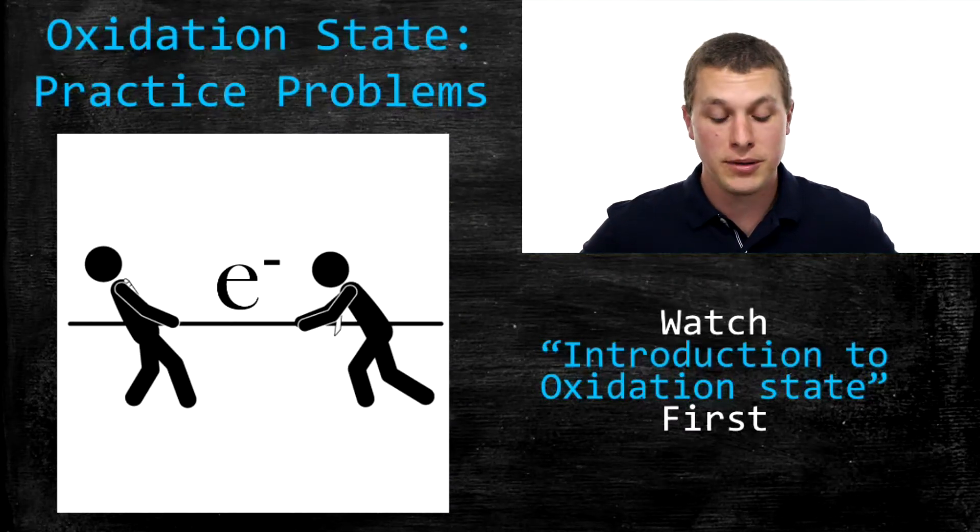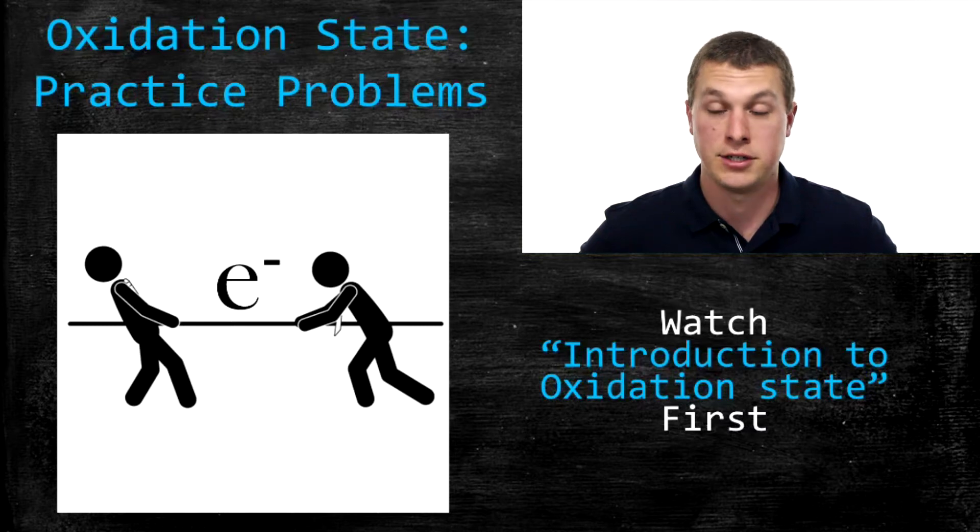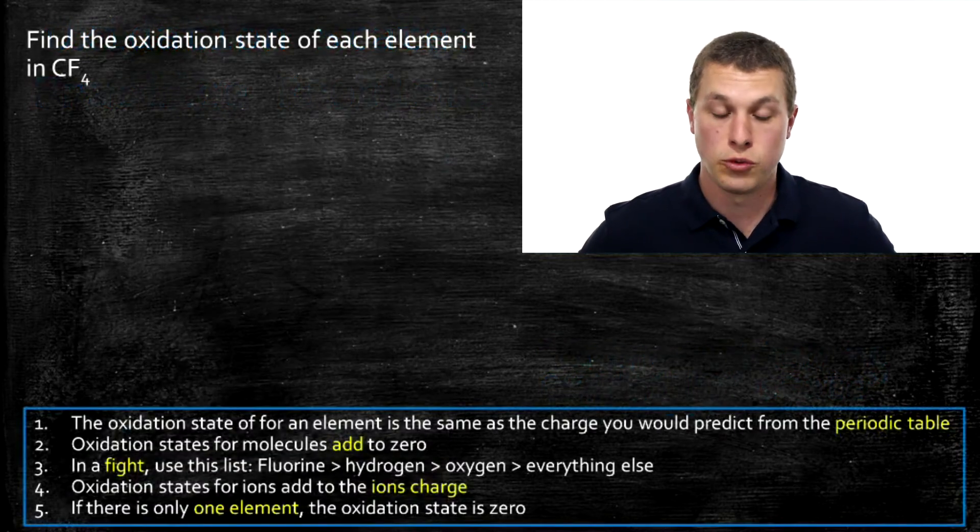Welcome to Real Chemistry. Today we're going to be talking about oxidation state and we're going to be doing some practice problems. I'm going to use a list of rules here that I slowly laid out in Introduction to Oxidation State. If you haven't watched that video, go ahead and do that first. We'll get right into doing some more practice problems.